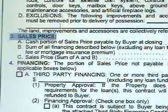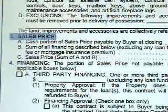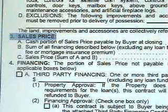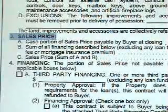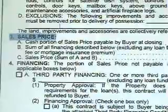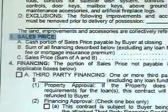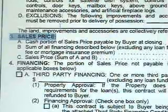Paragraph 3 of page 1 of the sales contract identifies the down payment, the amount financed, and the total price of the property. In this case, A equals the down payment, B equals the loan amount, and C equals the total price of the property.